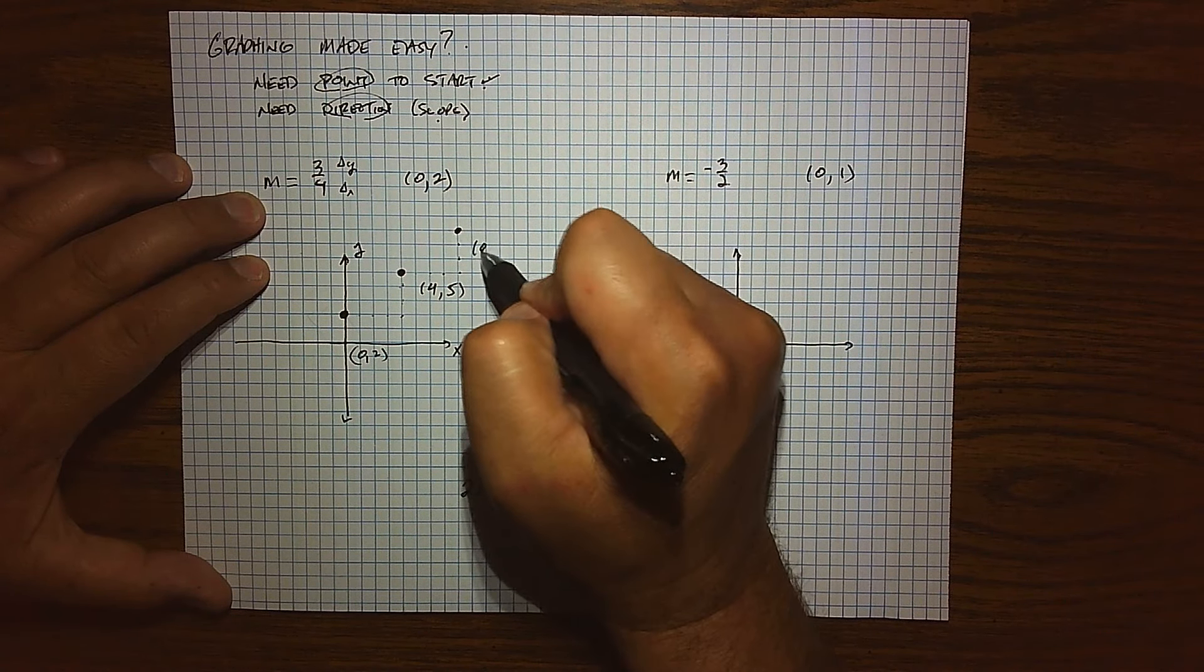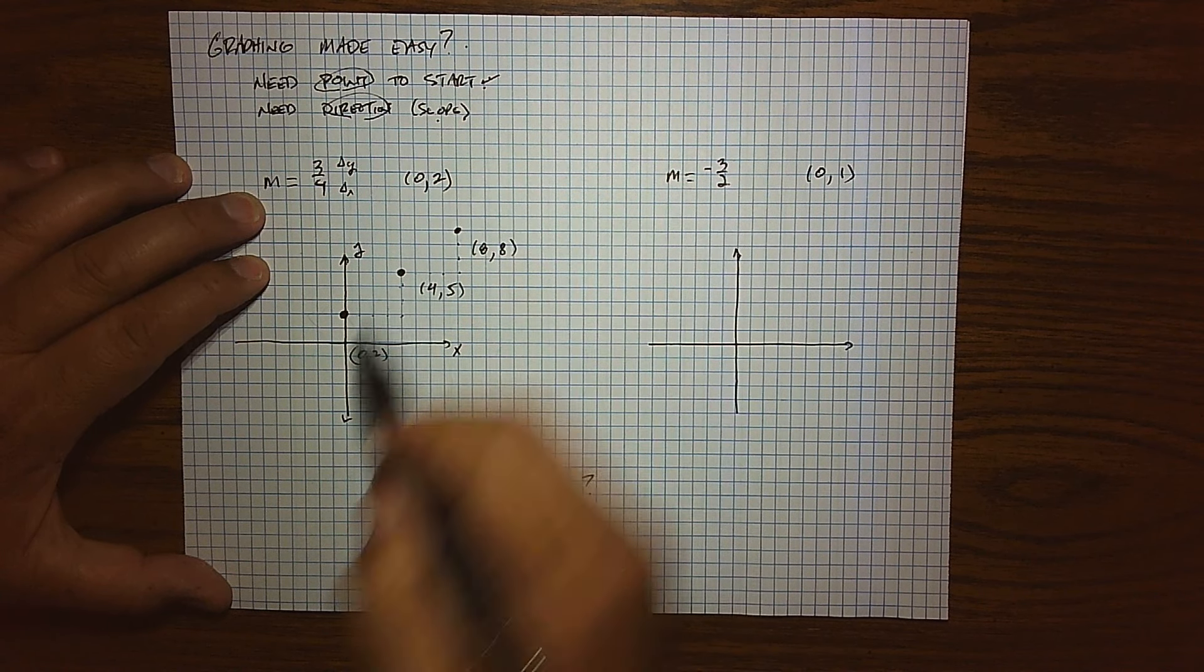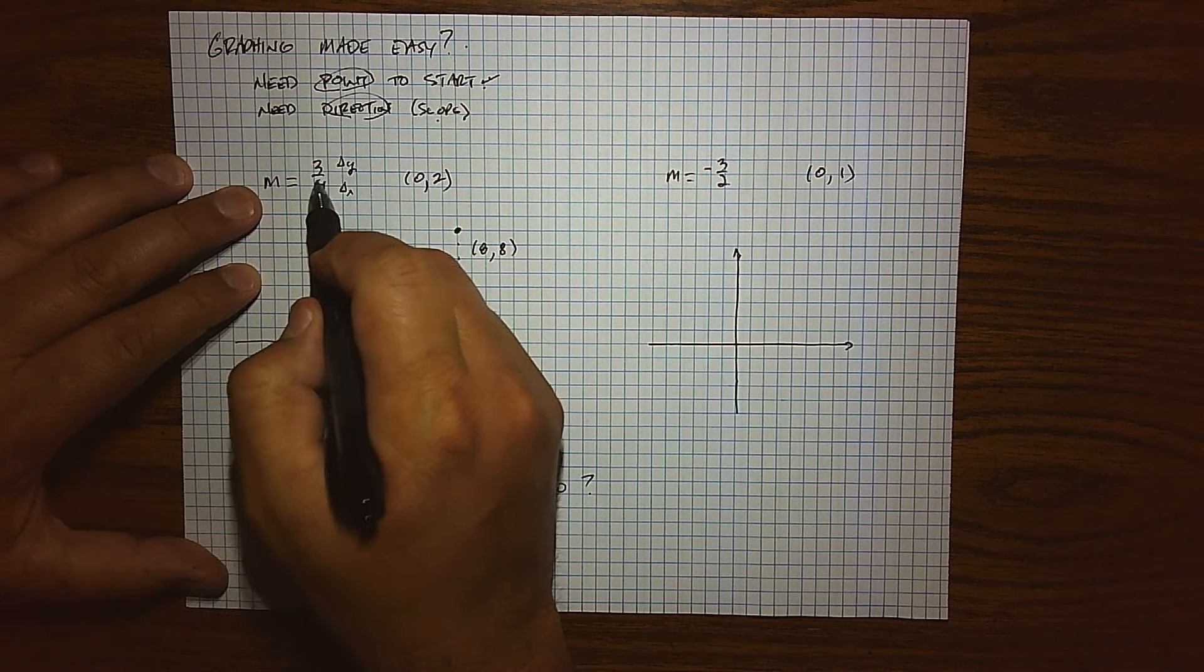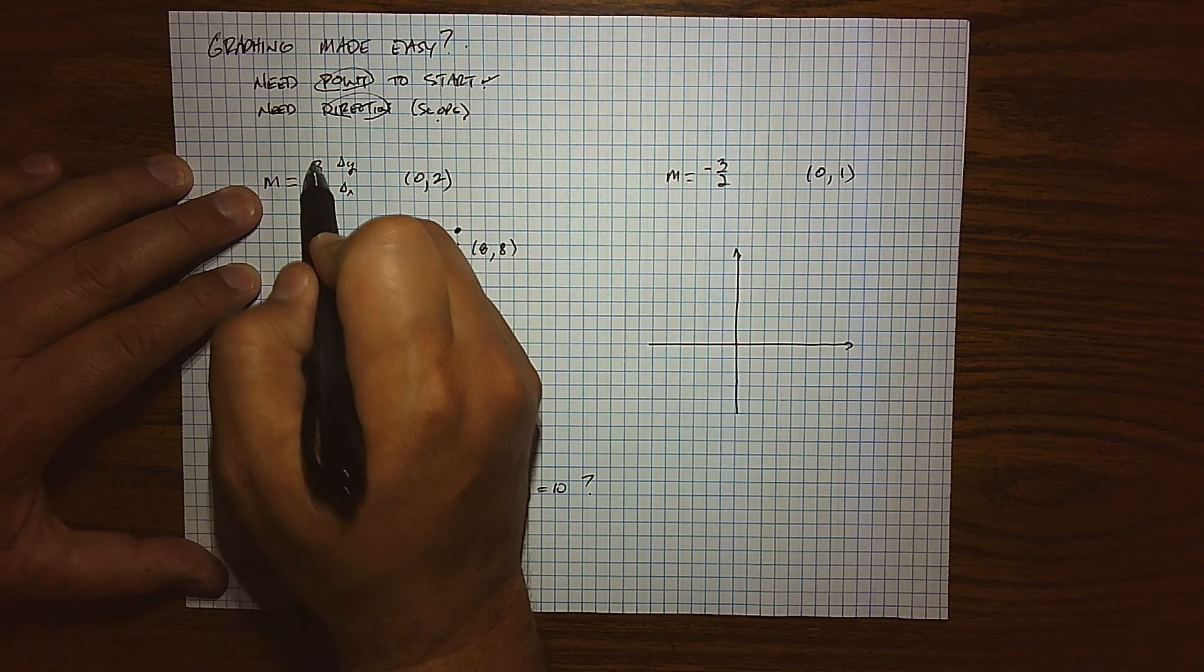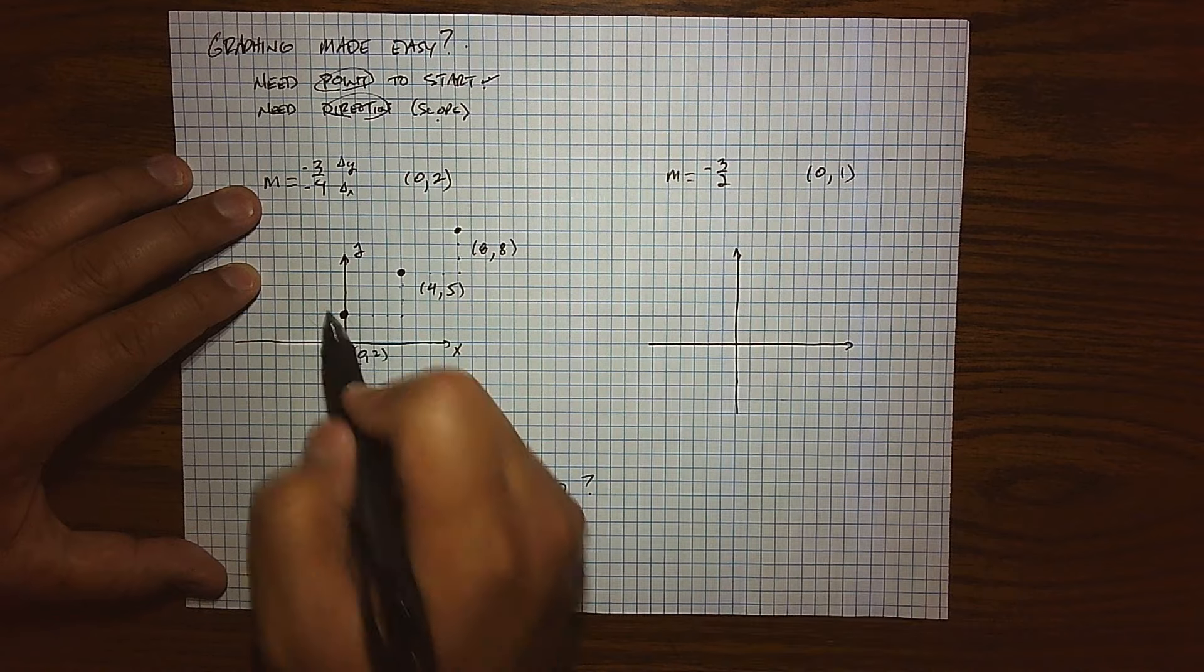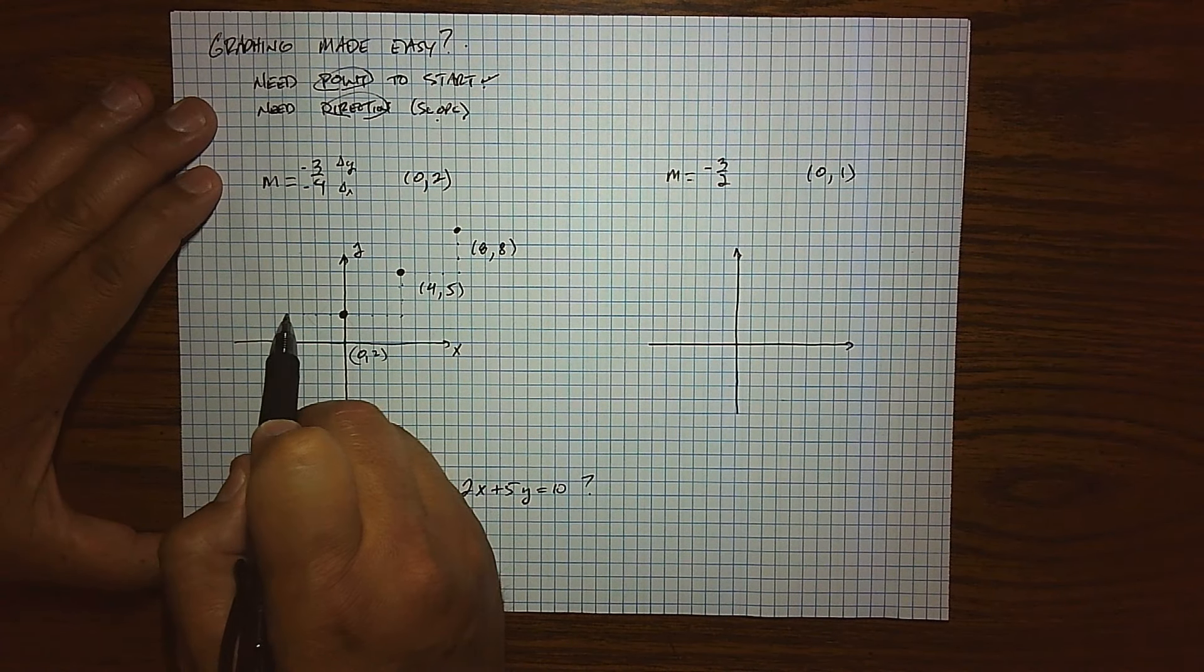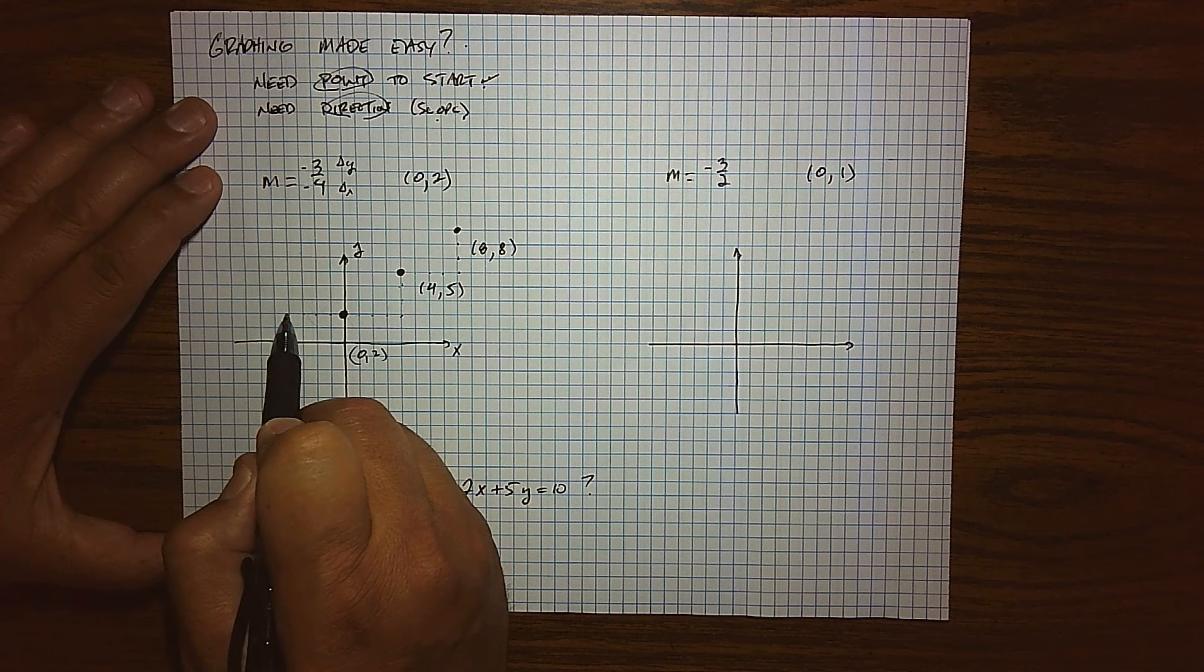And that looks like that takes us to (8, 8), right? Or you can kind of move in another direction. Another way to get a positive is to think of this as negative over a negative. And so that movement would actually be backwards for 1, 2, 3, 4, and then we're actually going to fall 1, 2, 3.